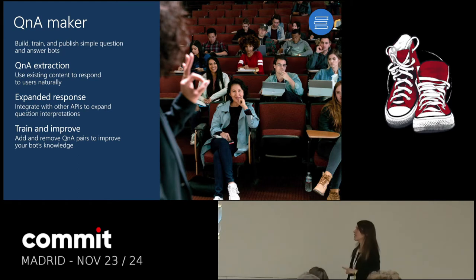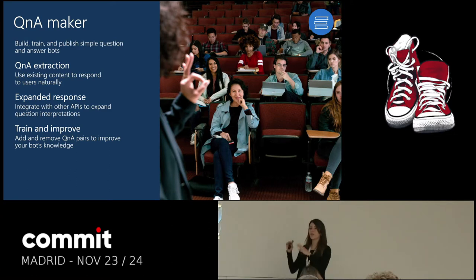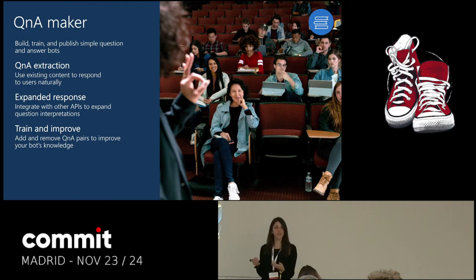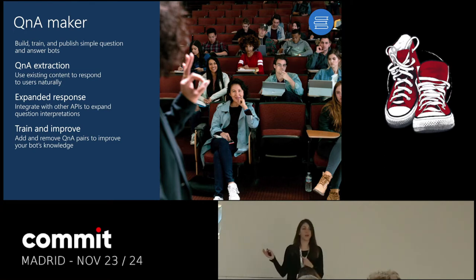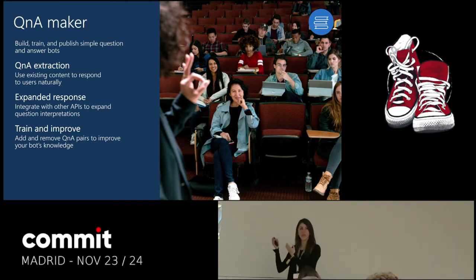Next one is Q&A Maker — this one's really cool. It's a bot that's basically given to us, already built. We don't have to worry about how to build a bot. What we do is upload the knowledge base we have — PDFs or Word documents with information. It'll automatically extract the information, and once we upload the knowledge base we have that bot already built for us. We can start making questions and it will return the information related to that question. The cool thing is you don't need to code anything. You go to the portal, say I want a new Q&A Maker, upload your knowledge base, and you can start using it right away.